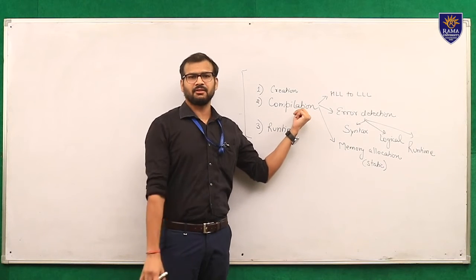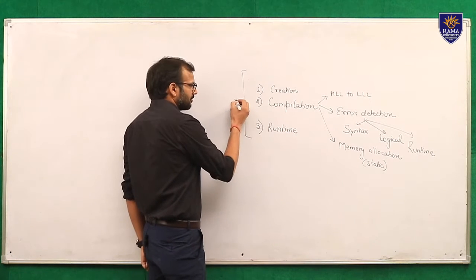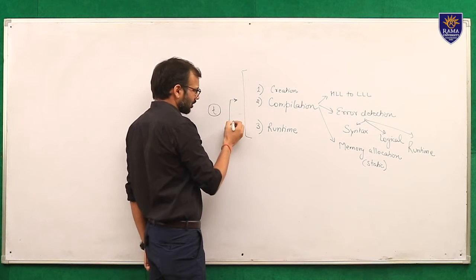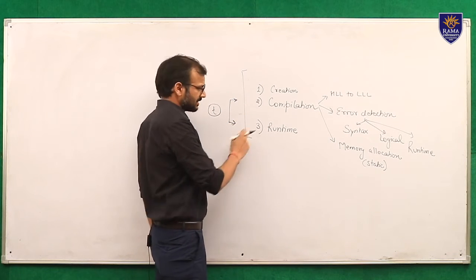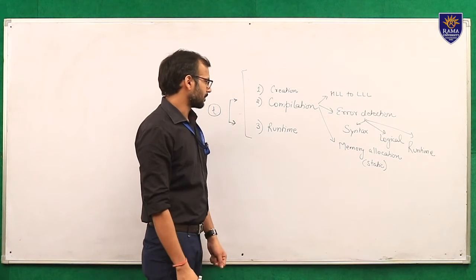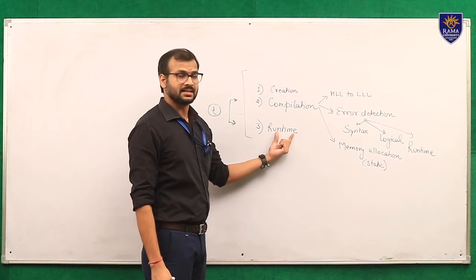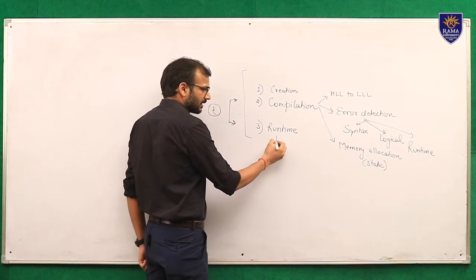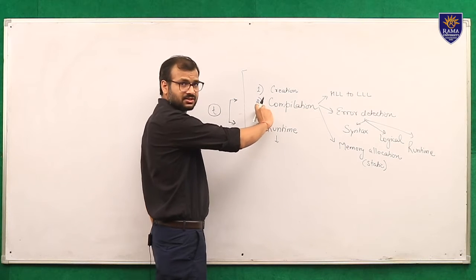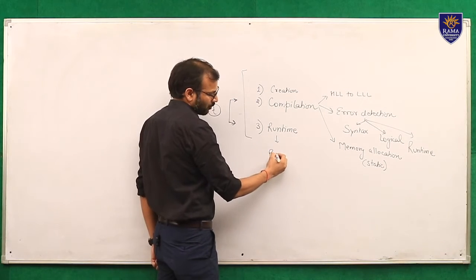Static memory allocation is done at compilation, but we need the values at runtime. So this is not practically feasible. The time slot between compilation and runtime means memory is uselessly engaged. What is practically feasible is that when we require the value, only then should the values be stored in memory — meaning the value must be stored at runtime. This approach is achieved by using pointers.